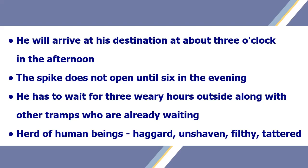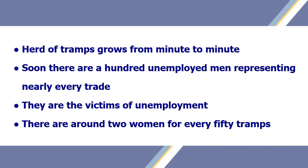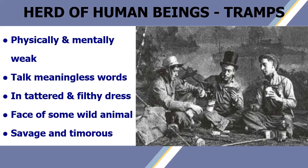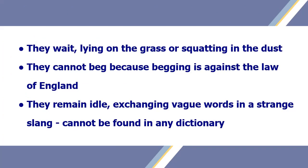The tramps waiting outside look like a herd of human beings — haggard, unshaven, filthy and tattered. The herd grows from minute to minute; soon there are a hundred unemployed men representing nearly every trade. There are around 2 women for every 50 tramps. They are physically and mentally weak, talk meaningless words, and their clothes are tattered and filthy. Their faces make us think of some wild animal. They wait lying on the grass or squatting in the dust. They cannot beg because begging is against the law of England, so they remain idle, exchanging vague words in a strange slang which cannot be found in any dictionary.